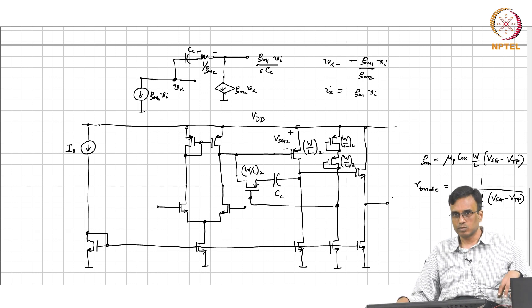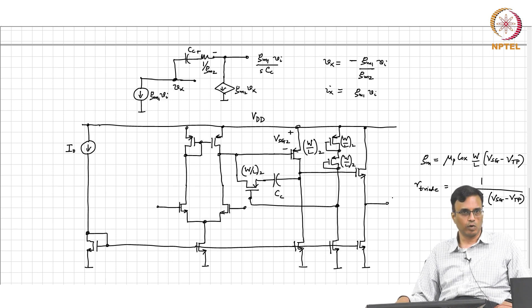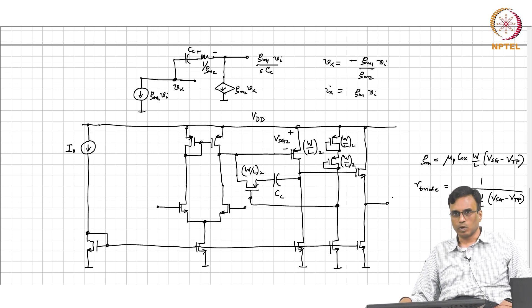That led us to the differential pair, and to get more gain we said we are going to cascade stages — that led us to the two-stage op amp. Then we figured out that this thing is going to be unstable when you close the loop, then we figured out how to stabilize it. With that, everything I wanted to say about MOS transistors and MOS amplifiers is complete.